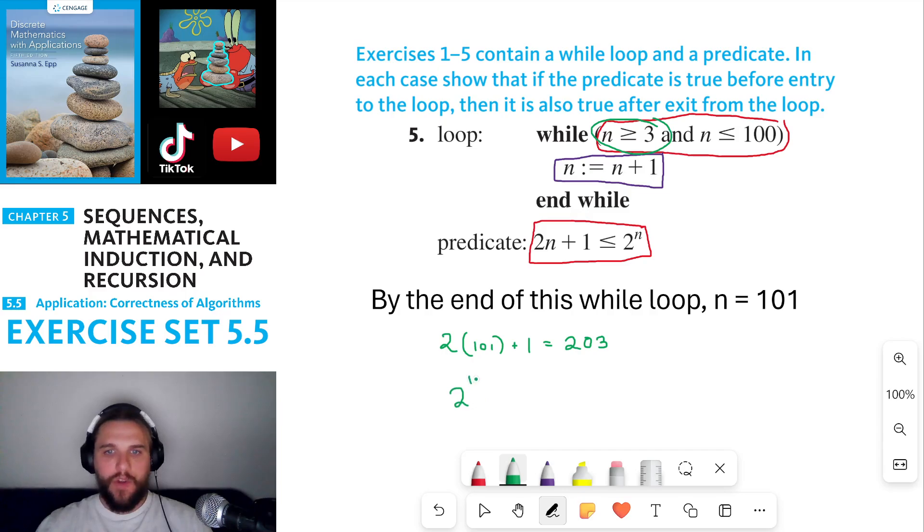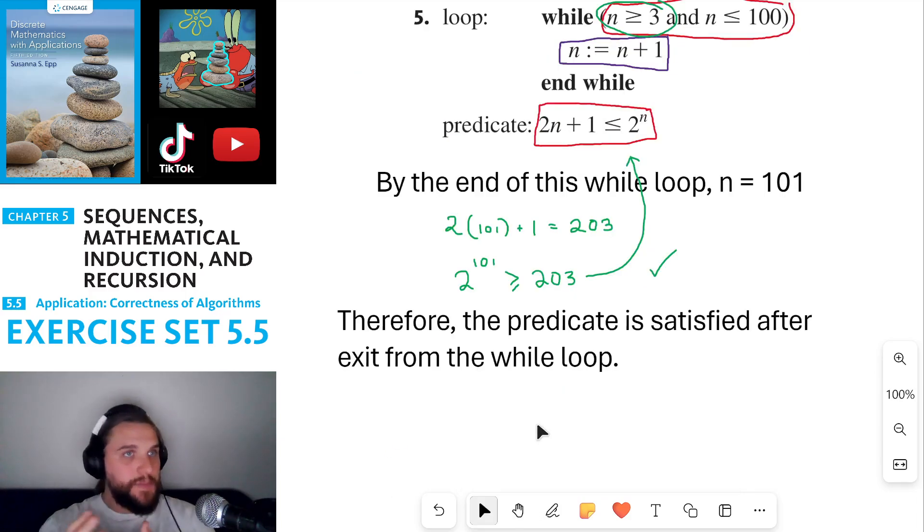2 times 101 plus 1 is 203. And 2 to the 101, well, that's a really big number. I don't think I can put that down in this whiteboard. But it's way, way bigger than 203. And in particular, it's greater than or equal to 203, which means that this predicate is satisfied for n equals 101. This means that the predicate is satisfied after exit from the while loop.